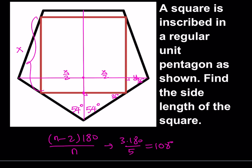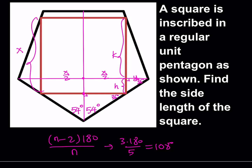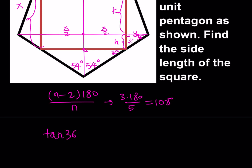I think we have everything we need and we're just going to be setting up some equations. We need to calculate more lengths. For example, we don't know this length h or this length k individually, but we do know that their sum is equal to x. To find h, I'm going to use this little triangle here. Since I have the angle 36 degrees and the base y, I can use tangent: tangent 36 equals h over y. So h is equal to y times tangent 36.